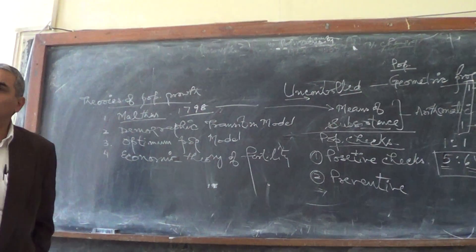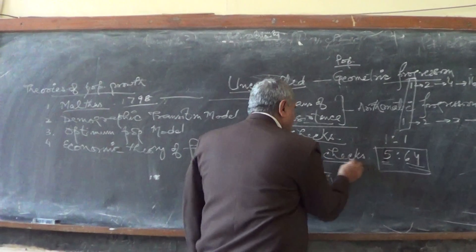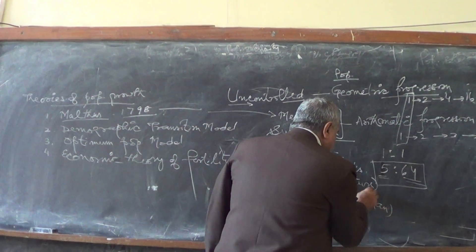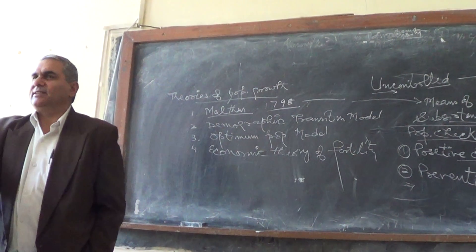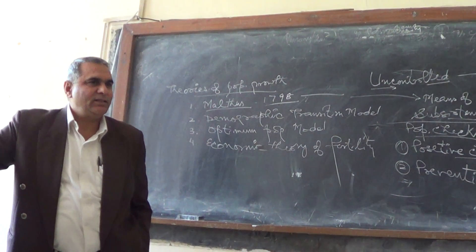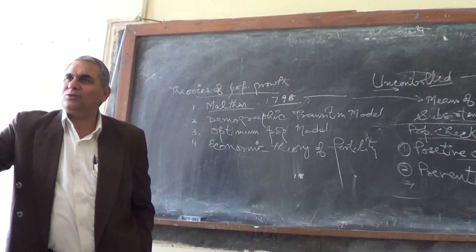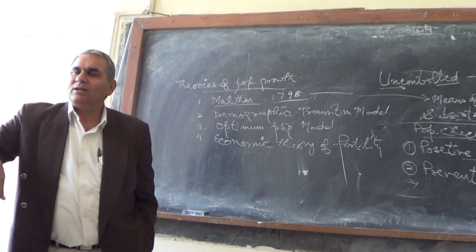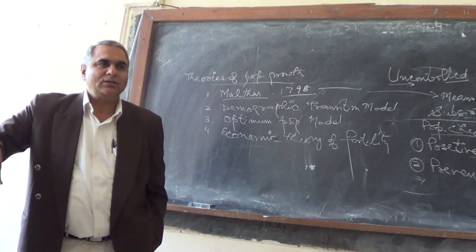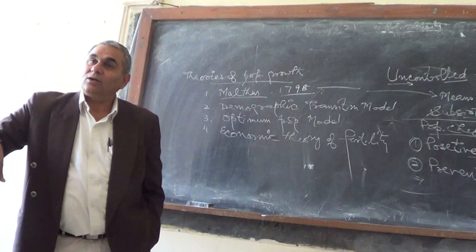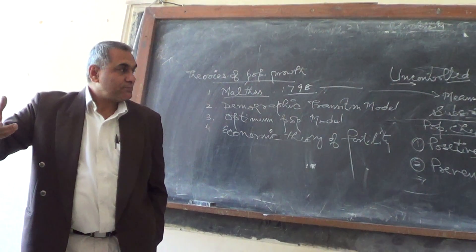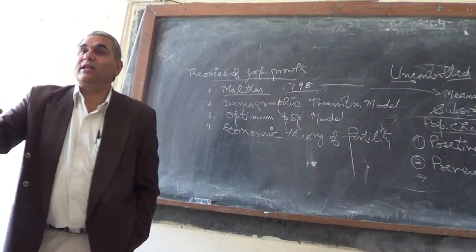A positive check is the job of nature. To reduce population, nature may bring drought, famine, flood, earthquake, volcano, tsunami, epidemics, war, diseases, illness, or shortage of food supply. When there is a check imposed by nature, that is called a positive check.